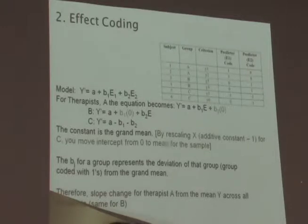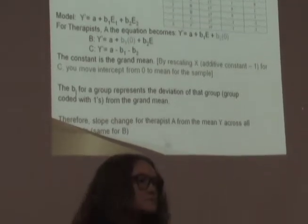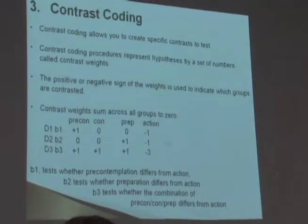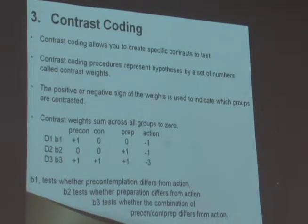Does anyone use effect coding rather than traditional dummy coding? It's very commonly done in fMRI — coding the effect of doing a particular task versus baseline, one condition versus baseline, another condition versus baseline, and coding between the two tasks. It can give really specific information. Contrast coding is similar: you create specific contrasts using contrast weights, where the positive or negative sign indicates which groups are being contrasted.